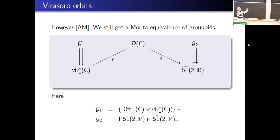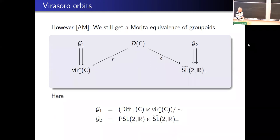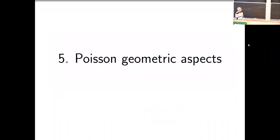Basically, whenever you have a Morita equivalence like this, once you have the thing on top you can actually construct the groupoids on the sides — we can start from D(C) and construct it that way, so from that description it's clearer why it has to be smooth.